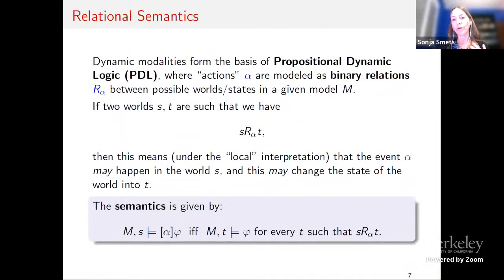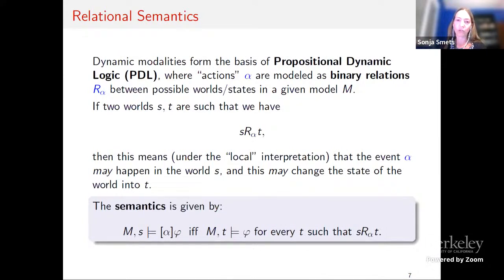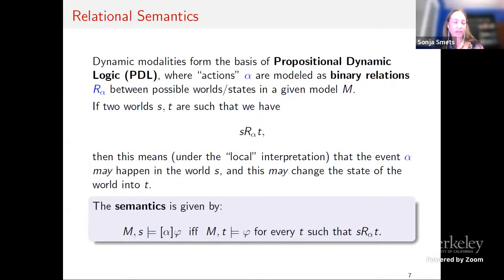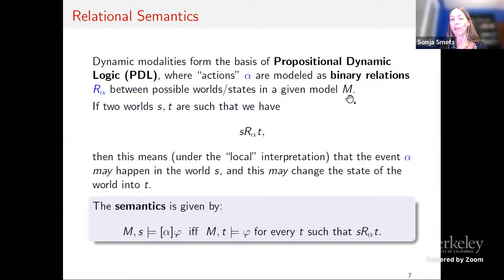When I use the word model or state, I use them interchangeably. The notion of world comes from possible worlds as used in modal logic, and I can also see them as points in the model or states of the system. Now let's get to the relational semantics. These dynamic modalities — box alpha phi — form the basis of propositional dynamic logic, where actions alpha are modeled as binary relations between the possible worlds or states of my model M.